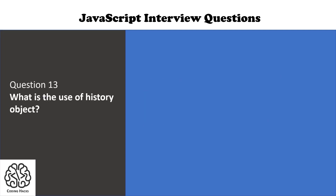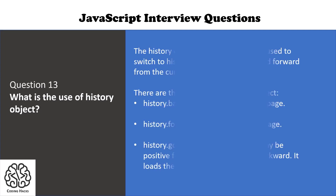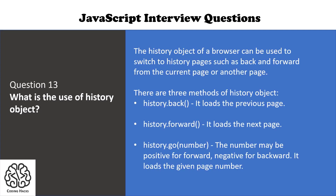The next question is: what is the use of the history object? The history object of a browser can be used to switch to history pages such as back and forward from the current page. There are three methods: history.back(), history.forward(), and history.go(), where you pass a number — positive for forward and negative for backward.